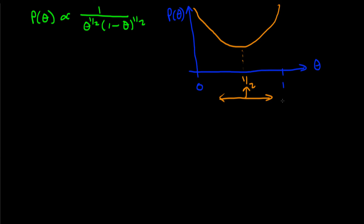Whereas if we obtain data characteristic of theta being close to one — for example, we flip a coin 10 times and every time it lands heads up — it's much less likely that a wide range of theta values could have generated that. So we're much more confident in our theta value. Similarly, if we obtained all zeros, we'd also be quite confident. The prior is chosen to reflect the nature of the likelihood.